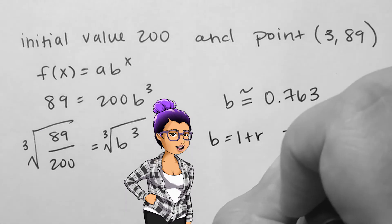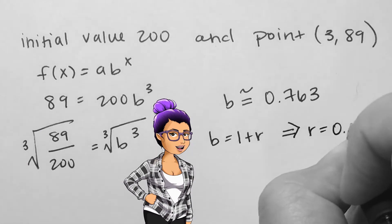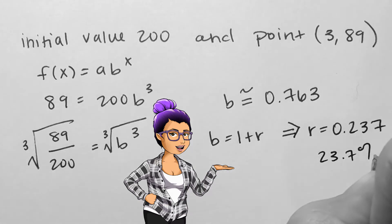we should see b equal to 0.763. Each unit up in the inputs will result in a 23.7% decay in the outputs.